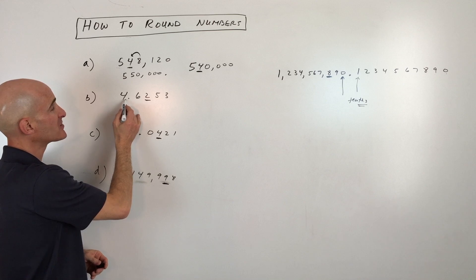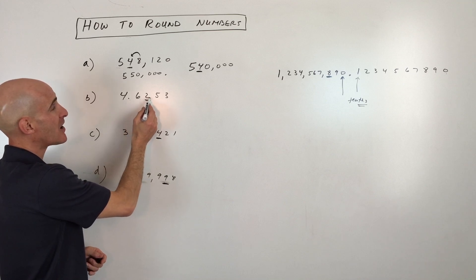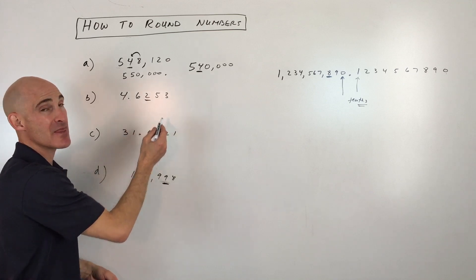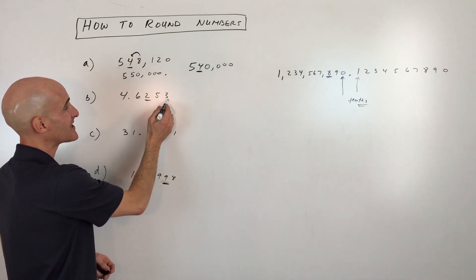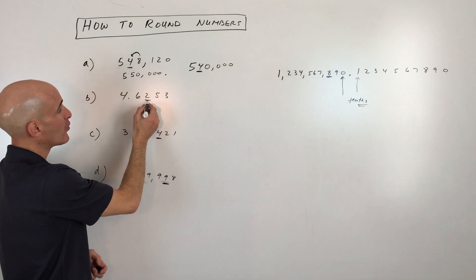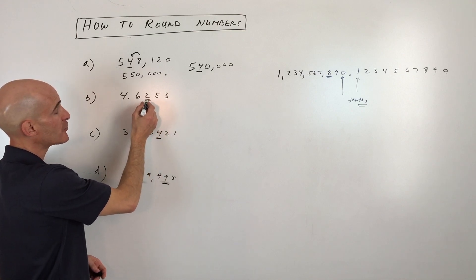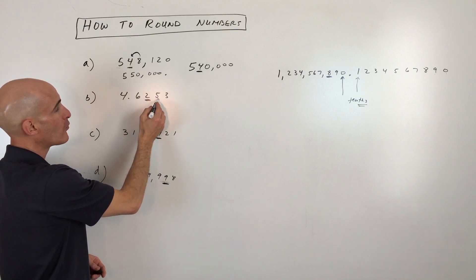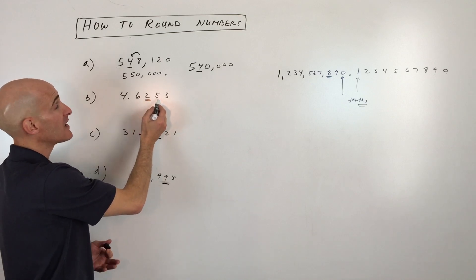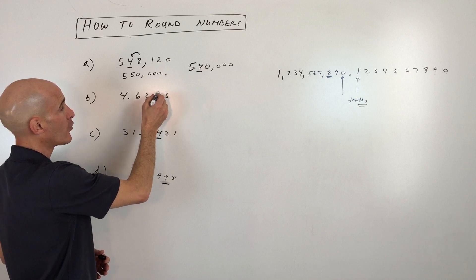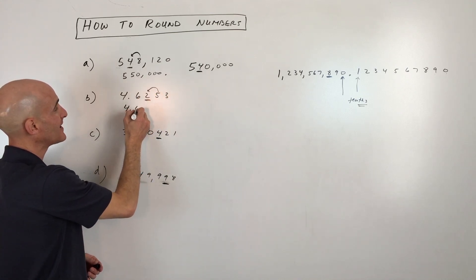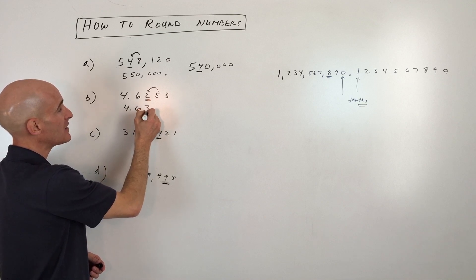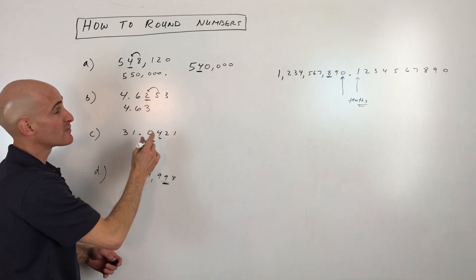Next example: 4.6253, which is read as four and six thousand two hundred fifty-three ten-thousandths. We want to round to the hundredths place. Going one place to the right of the hundredths digit, we find a five — five or more means we round up. So the hundredths digit goes from two to three, giving us 4.63.